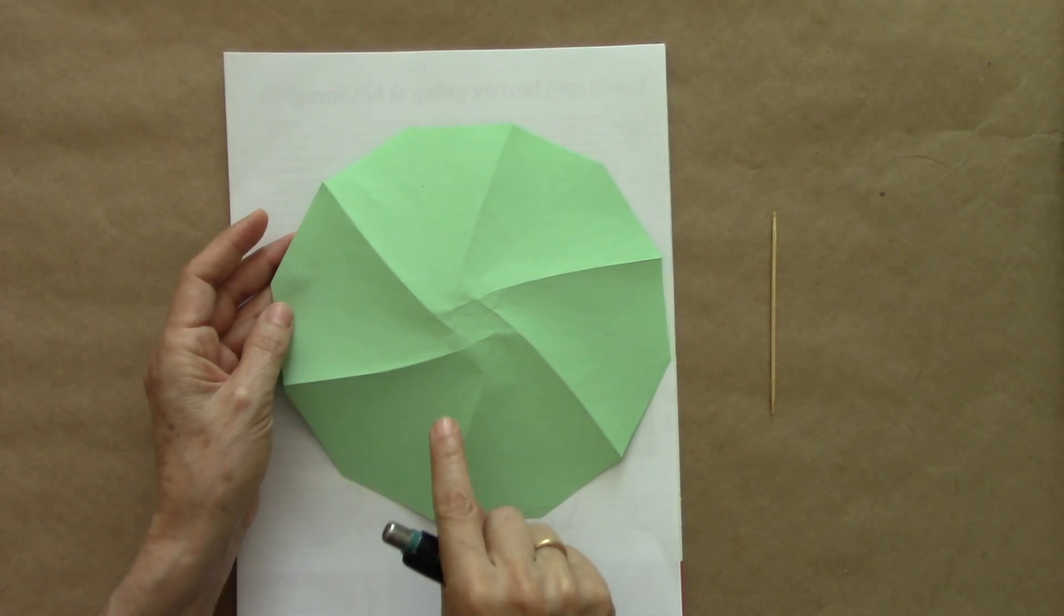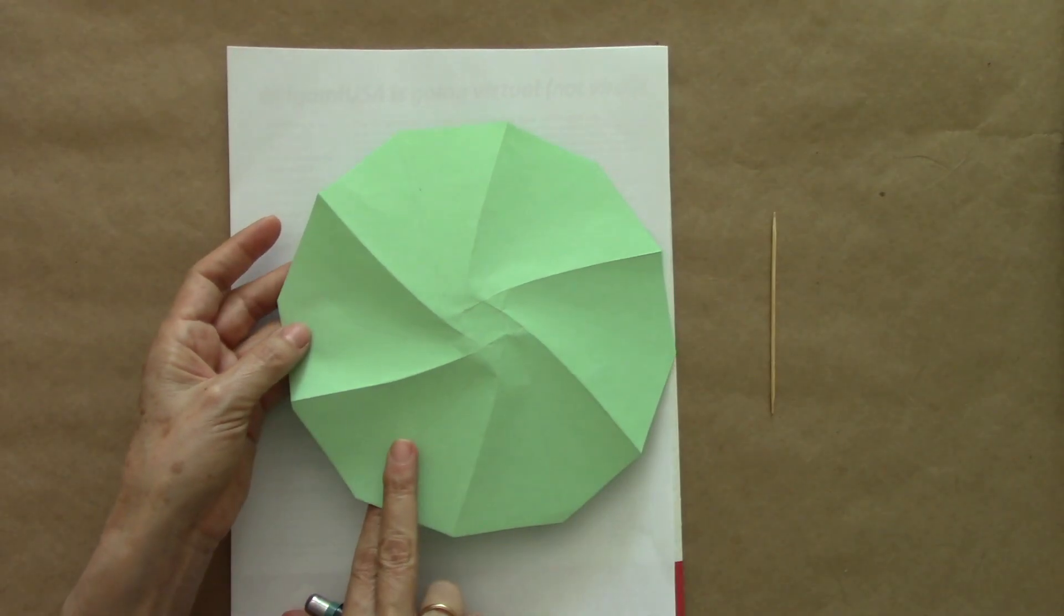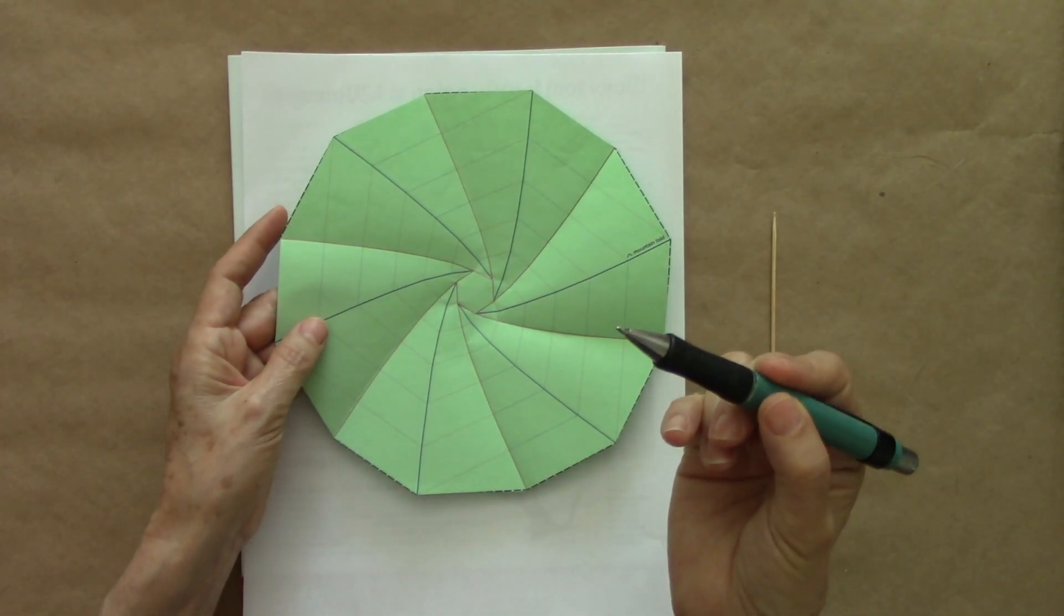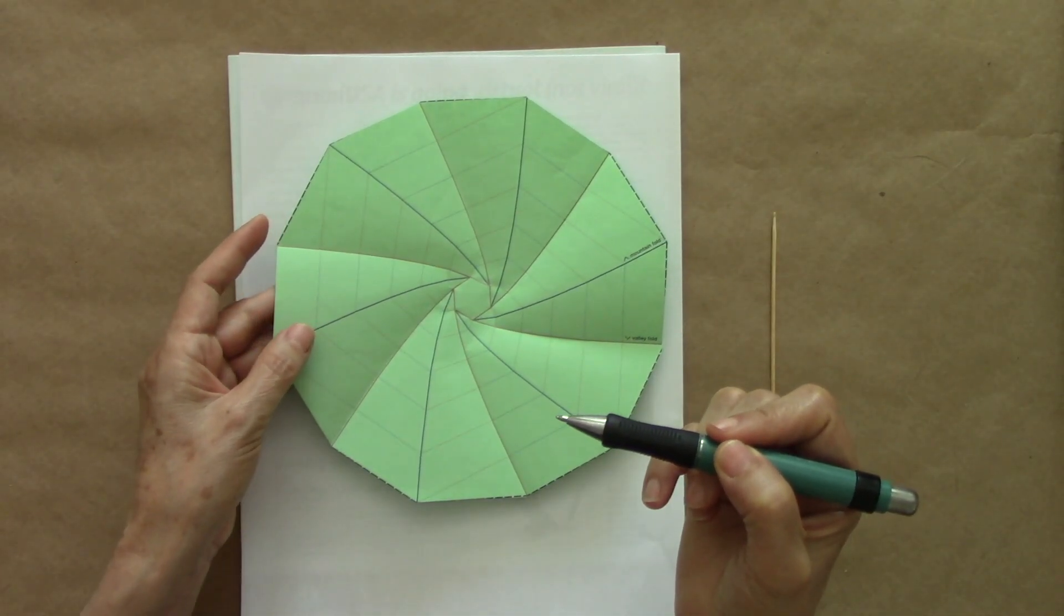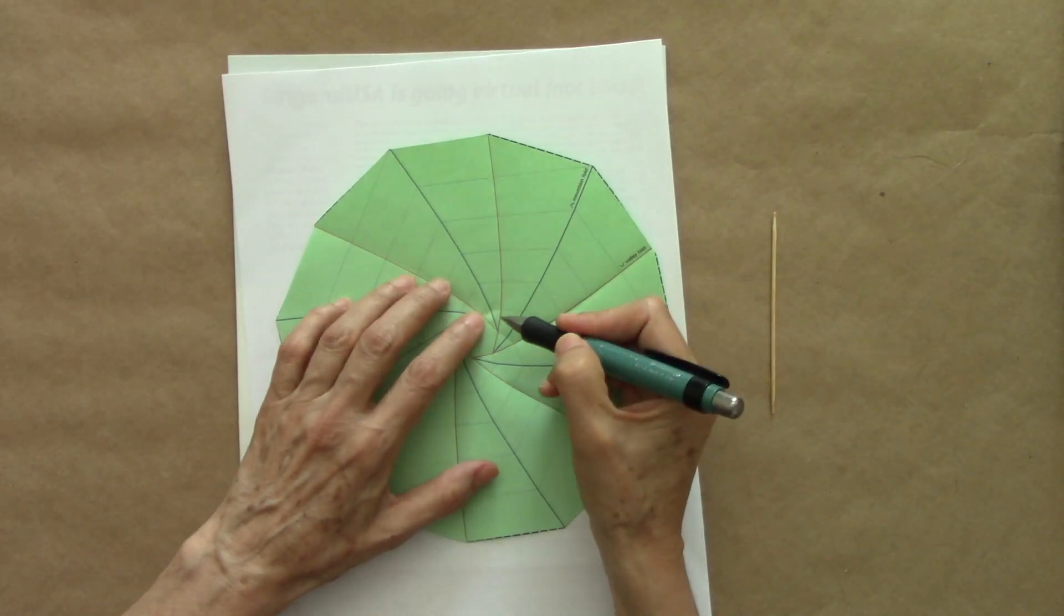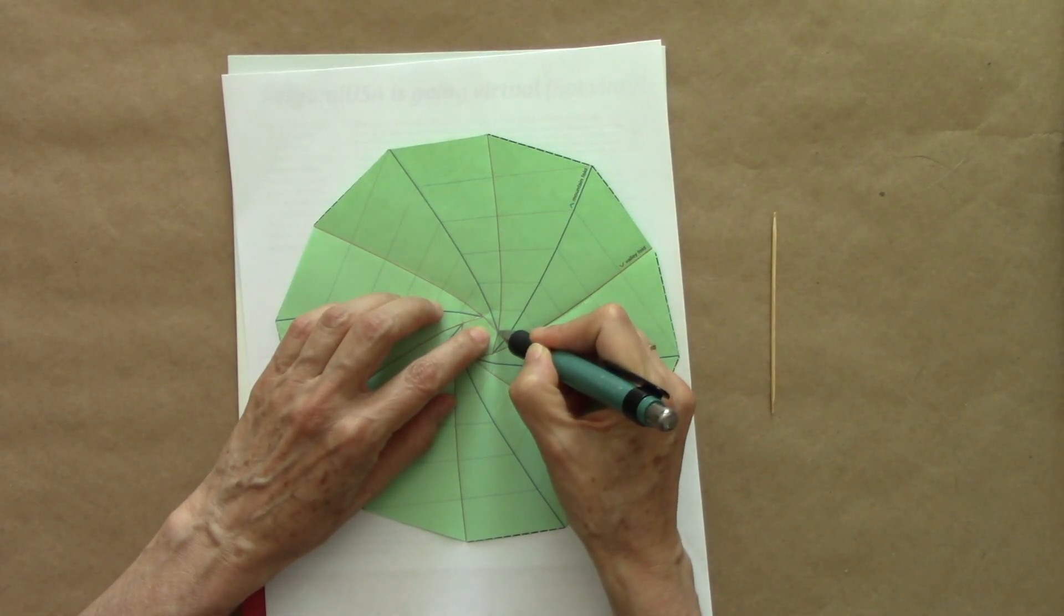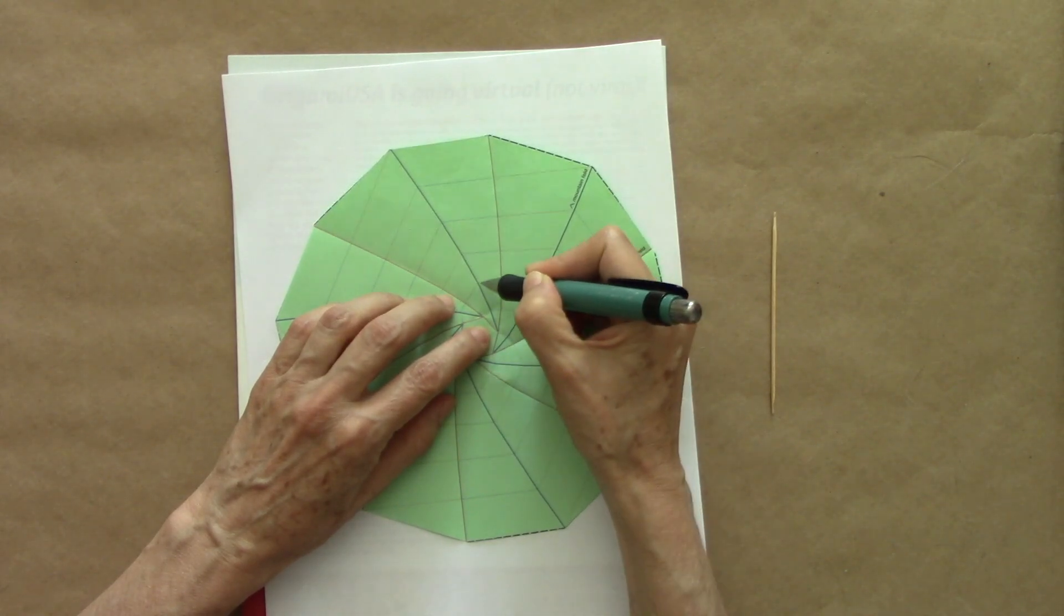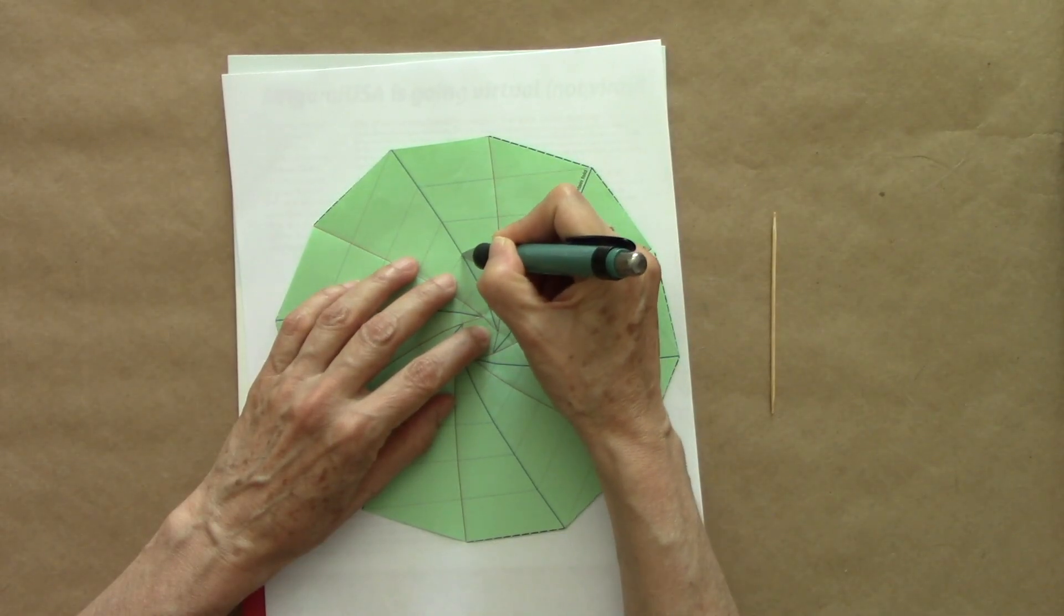Sometimes the paper is translucent enough that we can see the line. In this case, my paper is not translucent. So I'm going to go back here and I am going to score some markings so that I have them as reference. So each one of the blue lines, I'm going to score a little dot at each intersection, marking the sections.